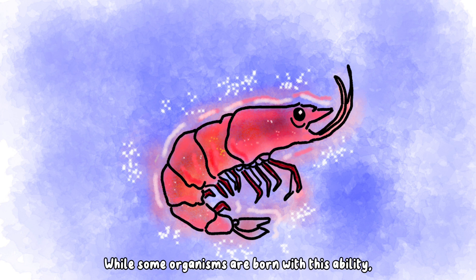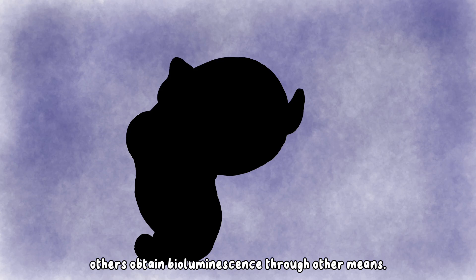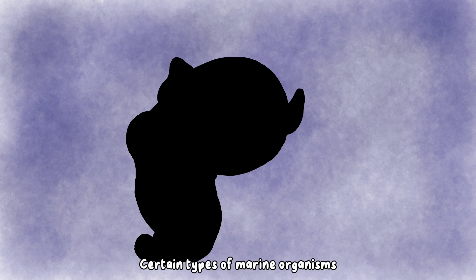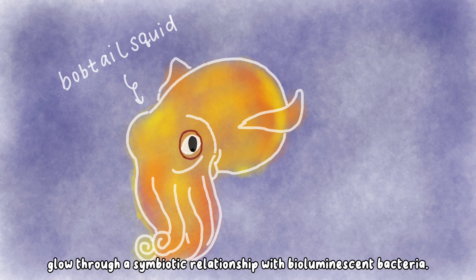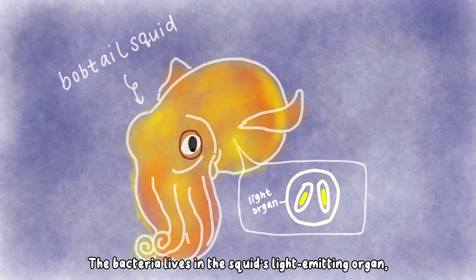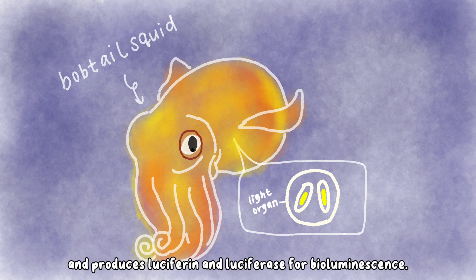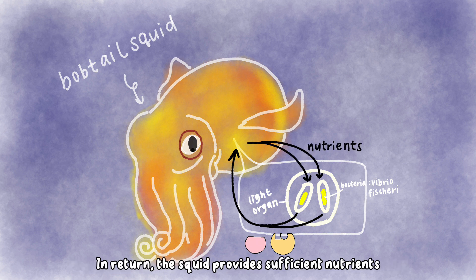While some organisms are born with this ability, others obtain bioluminescence through other means. Certain types of marine organisms, such as the bobtail squid, glow through a symbiotic relationship with bioluminescent bacteria. The bacteria lives in the squid's light-emitting organ, the photophore, and produces luciferin and luciferase for bioluminescence. In return, the squid provides sufficient nutrients for the bacteria to live.